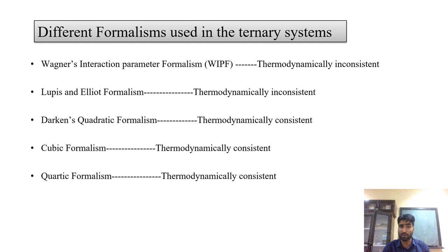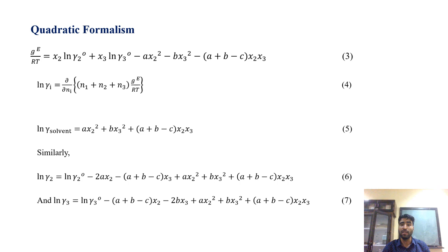Then we move on to the cubic formalism. If we increase by one order, we go to the cubic formalism. From all these formalisms, if we have to obtain the values of the activity coefficient of either solute or solvent, we have to first divide by the gas constant and temperature, then partially differentiate it, then multiply by the total number of moles, and finally partially differentiate with respect to Ni, where Ni represents the number of moles of either solvent or solute.